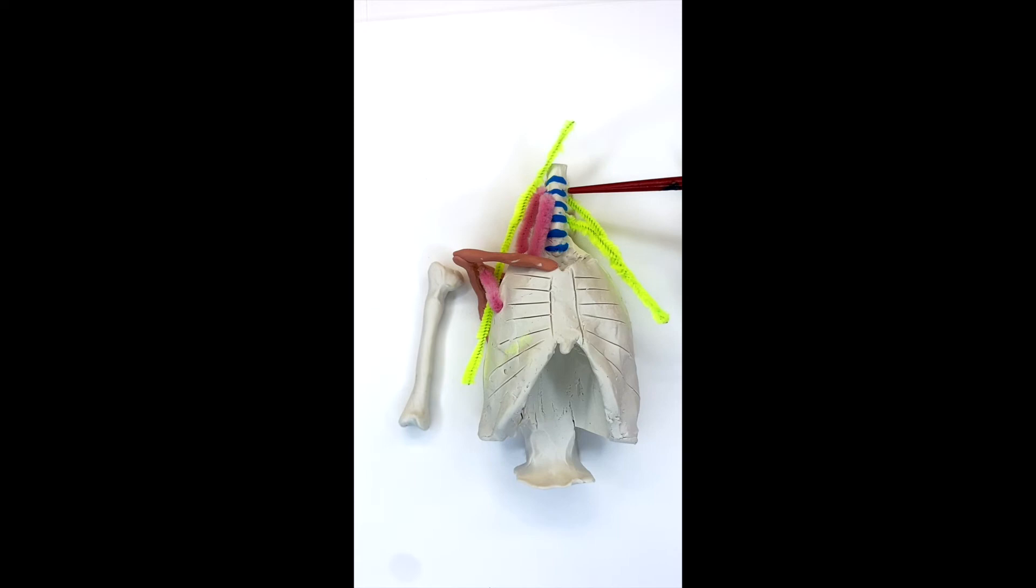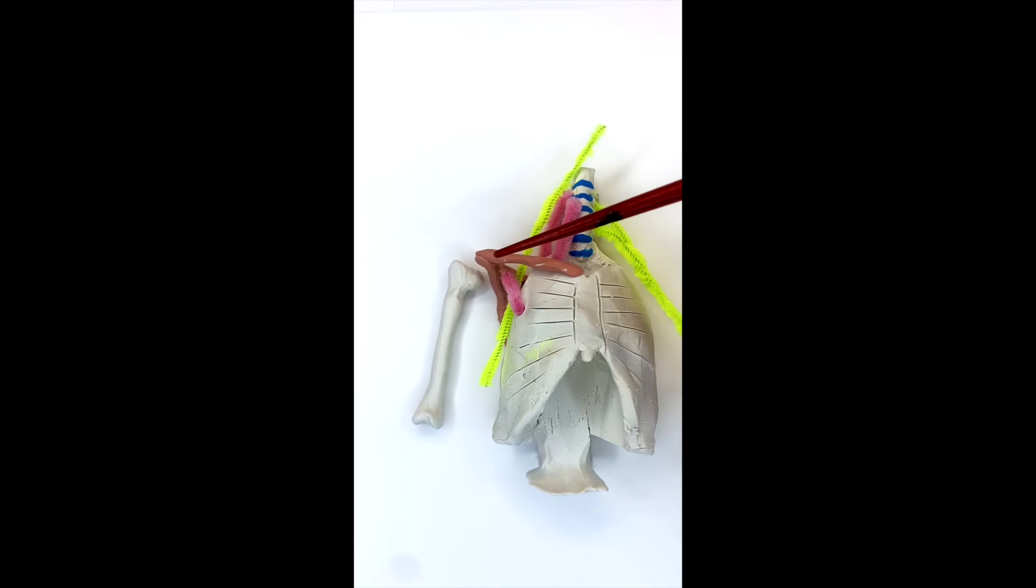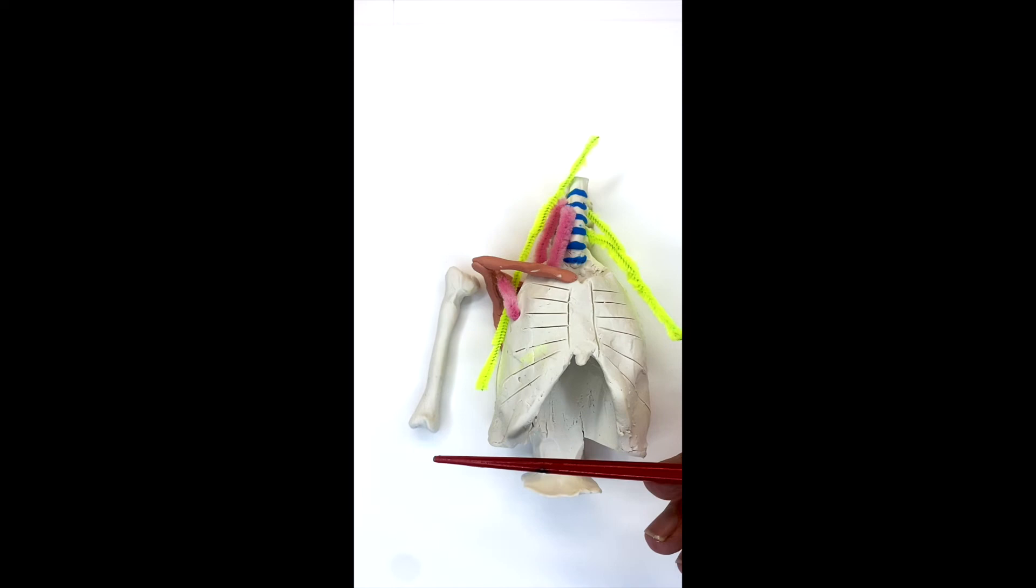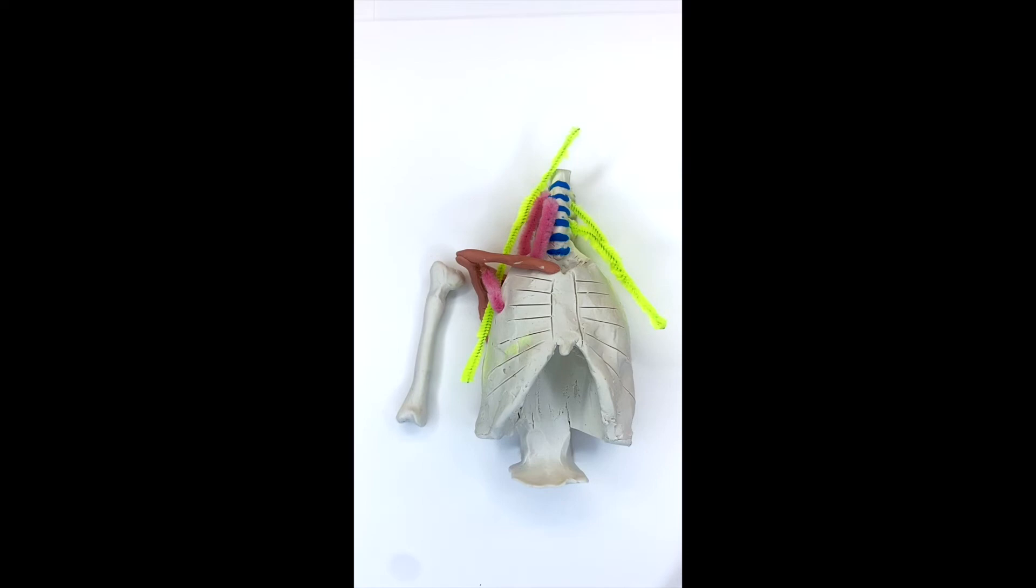So it can come from the spine, it can come from scalene compression, it can come from pec minor compression, or it can even be compression in the carpal tunnel, which is in the wrist if you're having nerve sensations in the hand. How do you know which one it is? Also, it could be all of them at the same time. That's not impossible.